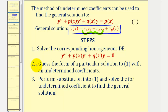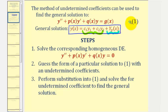For step two, we're going to guess the form of the particular solution to the non-homogeneous differential equation based upon g of x. This function is going to have undetermined coefficients. Then for step three, we'll perform substitutions based upon the function we're guessing will be a particular solution, and then we'll solve for the undetermined coefficients to find the general solution. So steps two and three allow us to find this particular solution. Let's go ahead and give it a try.